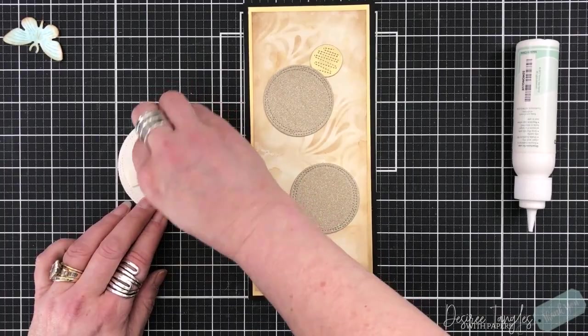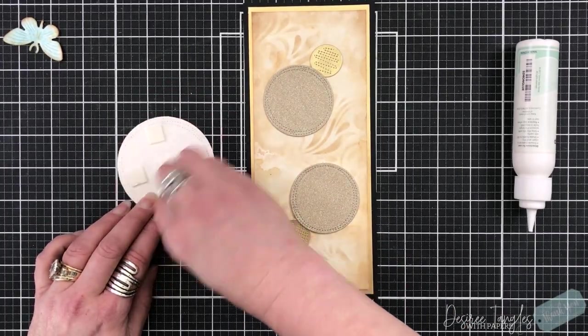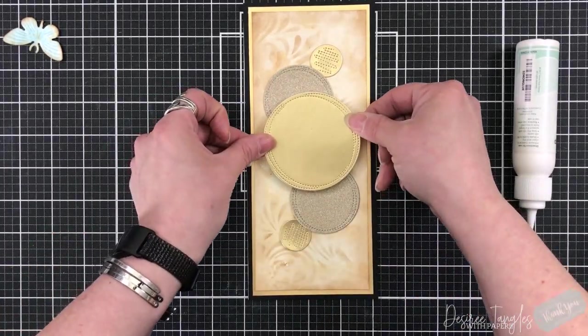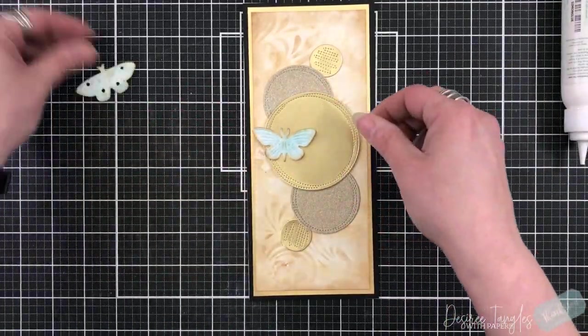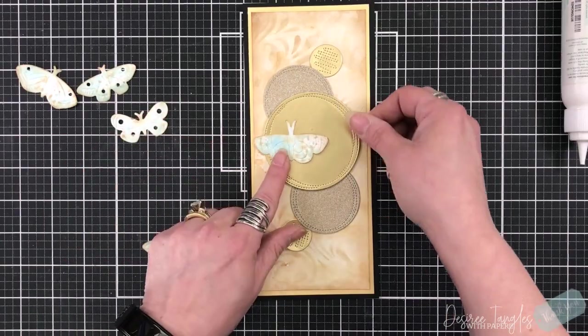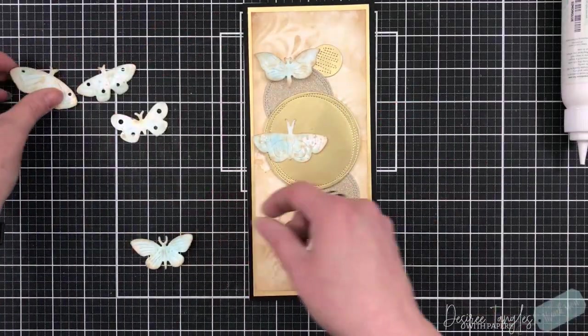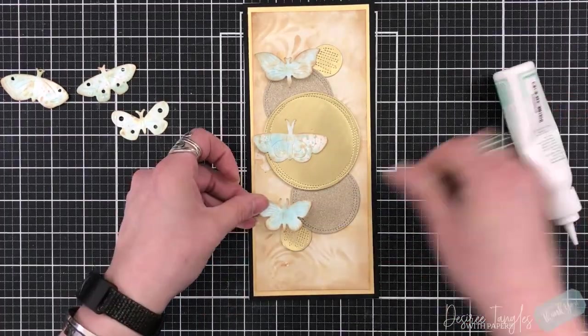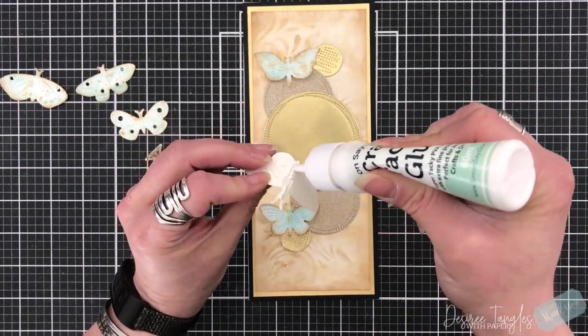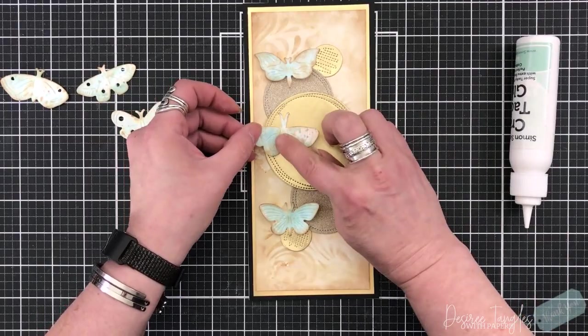I die cut these from the matte gold cardstock and also a glitter cardstock, and you can see these great stitch lines in there. I just created a design with those circles going down the front of my slimline.